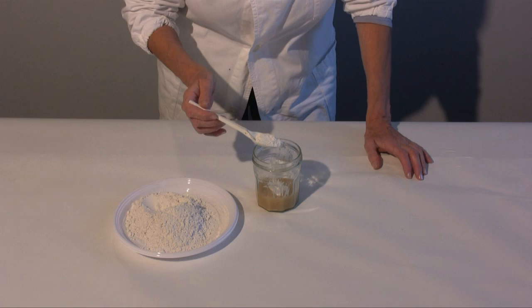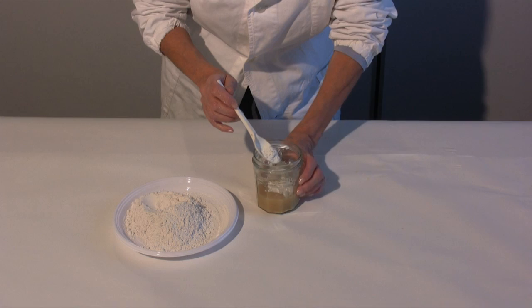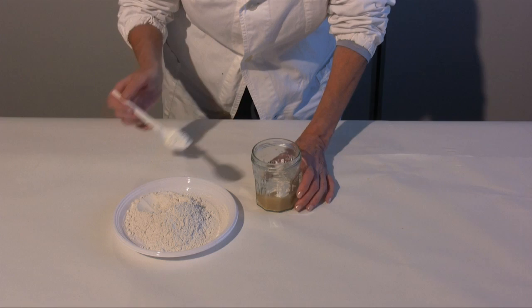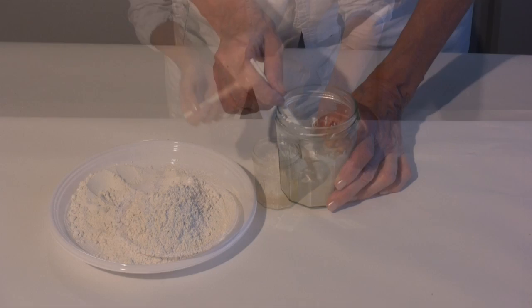There isn't a precise amount of plaster to put. I stop when I see that the plaster isn't being incorporated by the glue anymore. Only at this point can the plaster and glue be mixed together until the mix has the same consistency as it did before.